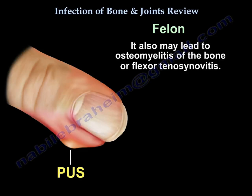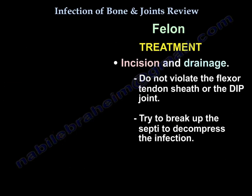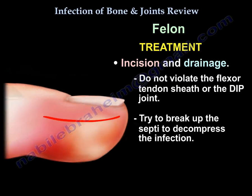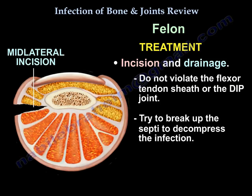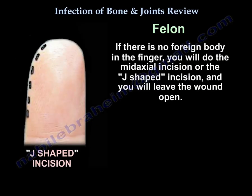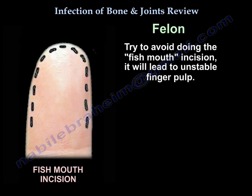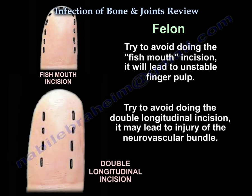The increased pressure leads to vascular compromise and necrosis of tissue. It may also lead to osteomyelitis of the bone or flexor tenosynovitis. Staph aureus is the most common organism. For treatment, perform incision and drainage. Do not violate the flexor tendon sheath or the DIP joint. Try to break up the septa to decompress the infection. Use the mid-axial or J-incision if no foreign body is present, and leave the wound open. If there is a foreign body like a splinter or thorn, use the volar longitudinal incision. Avoid the fish-mouth incision — it causes an unstable finger pulp — and avoid the double longitudinal incision, which may injure the neurovascular bundle.